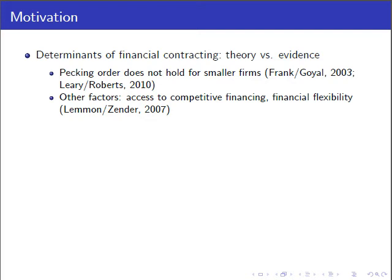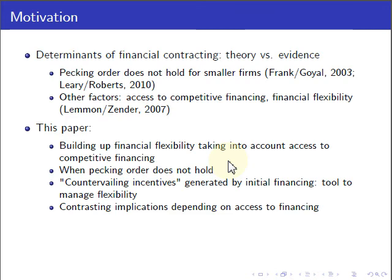Roman and I started thinking about what makes smaller firms different from large firms. An immediate observation is that smaller firms often don't have such good access to a competitive market for capital. Another thing which has also been in the discussion lately is that firms very often try to build up financial flexibility. So what we tried to do in this paper is propose a model of a firm building up financial flexibility by explicitly taking into account that such a firm may not have access to a competitive market for capital.